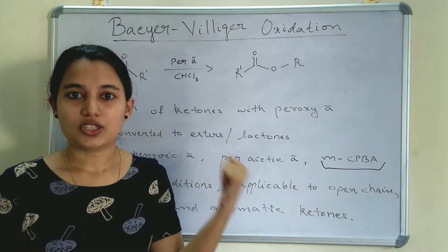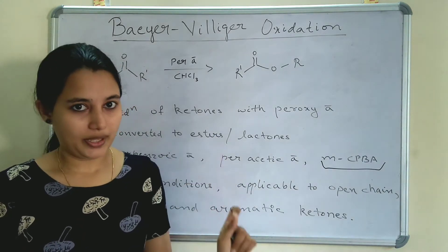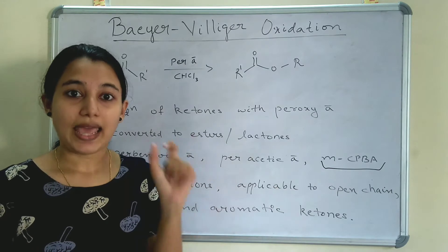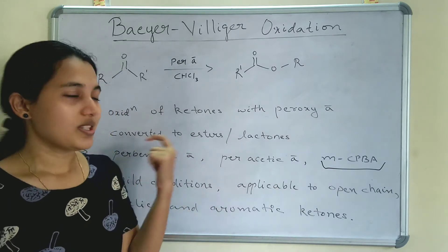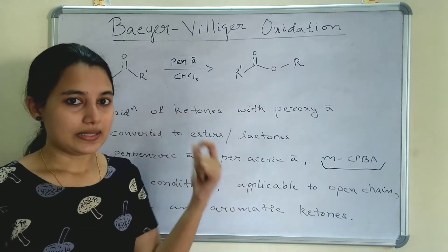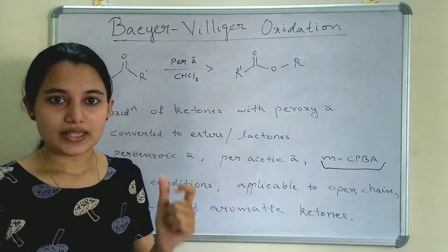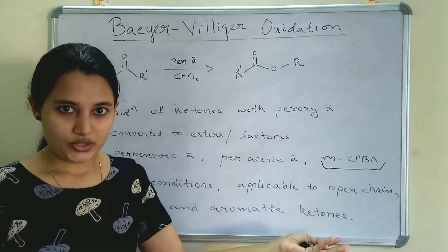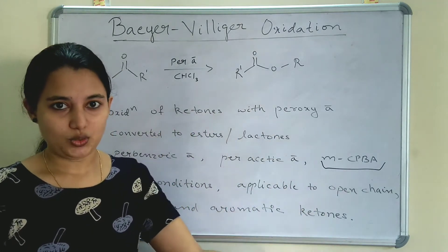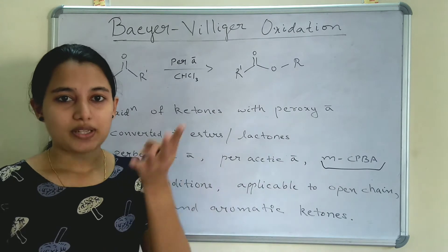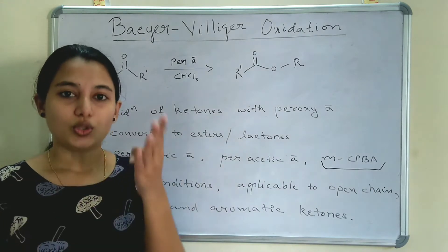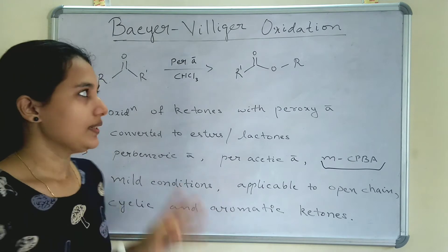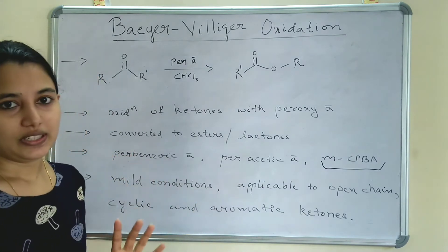Baeyer-Villiger Oxidation can be applied to cyclic, open-chain, and aromatic ketones. It is the oxidation of ketones — cyclic, open-chain, or aromatic ketones — in presence of peracetic acid, converting them to esters or lactones. That is Baeyer-Villiger Oxidation.